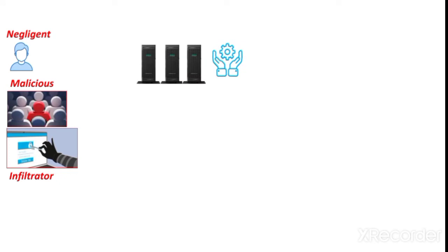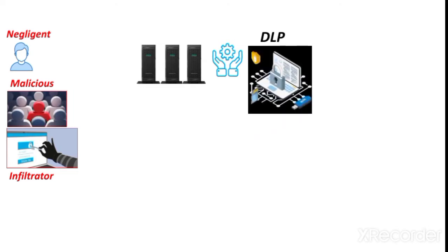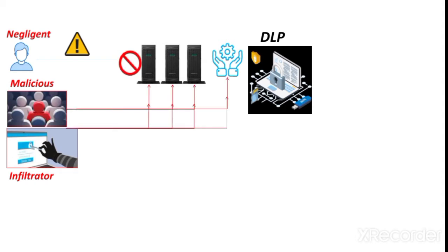Solutions like Data Leakage Prevention or DLP provide protection against a single session, so if a negligent or malicious user has established a session and is trying to download something from your organization assets, DLP can block such attempts. However, if a malicious infiltrator is very technical and carrying out malicious actions unsuspiciously over a period of time, it is very difficult for DLP solutions to detect and block such attempts because the malicious actor is staying under the radar.